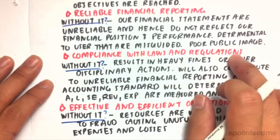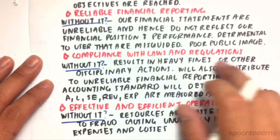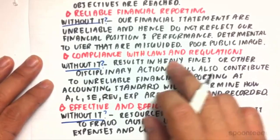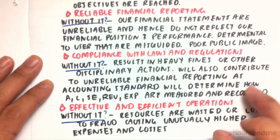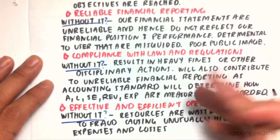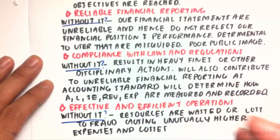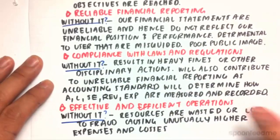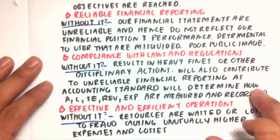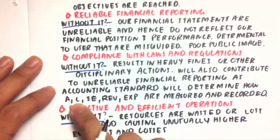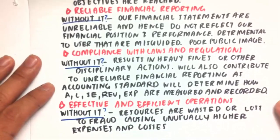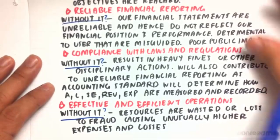Next, compliance with laws and regulations. If we don't have compliance with laws and regulations and therefore don't have internal control, we can get heavy fines or other disciplinary actions. It also contributes to unreliable financial reporting if we're steering clear of accounting standards — the financial reporting won't comply with everyone else's, so it will be misguiding our users. Accounting standards determine how our assets, liabilities, shareholders' equity, revenue, and expenses are measured and recorded, and without them we can have bogus numbers and manipulated data.